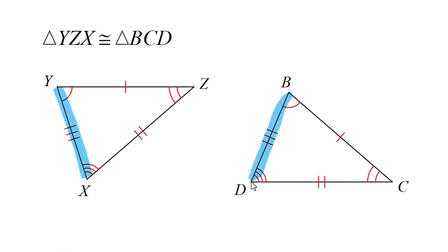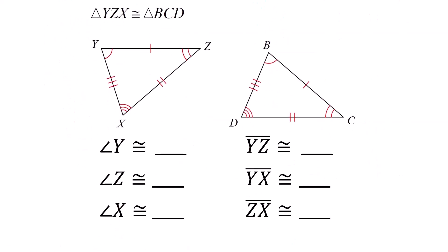How do you tell which side goes where in the congruency statement? We know that Y and X have to correspond to B and D in that order. Now let's write it all out — same two triangles, but we're going to write it out the way you'd have to put it on homework or a worksheet.